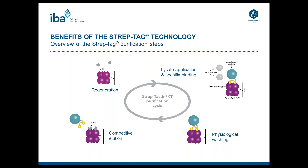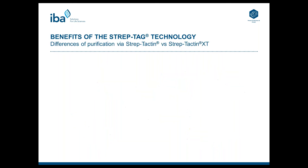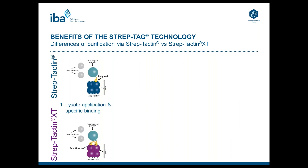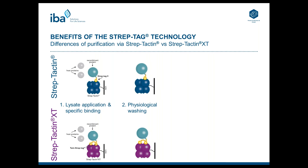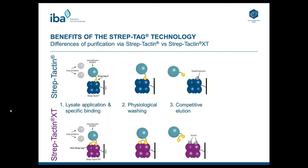Now let's compare the two purification cycles from Streptactin and Streptactin XT. In the first step, you apply your lysate for both and specific binding occurs, and the physiological washing conditions are the same for both. The competitive elution on Streptactin is done by addition of desthiobiotin. On the other hand, the competitive elution from Streptactin XT is done by addition of biotin — desthiobiotin cannot be used for Streptactin XT because its binding affinity towards Streptactin XT is too low to compete with Twin StrepTech for the biotin binding site. So it is very important that when using Streptactin XT, you use biotin for competitive elution.